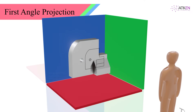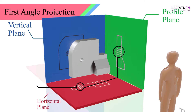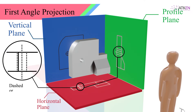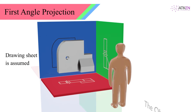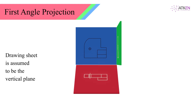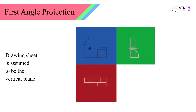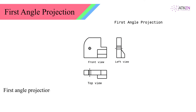Maintaining this convention, the front view is projected on the vertical plane, the top view is projected on the horizontal plane, and the left side view is projected on the profile plane. Edges of the object that are hidden from the observer are shown by dashed or hidden lines. By convention, the drawing sheet is assumed to be the vertical plane; therefore, the horizontal and profile planes are rotated to bring them into the same plane as the drawing sheet. The front view comes above the top view, and the left-hand side view comes to the right of the front view, and vice versa.